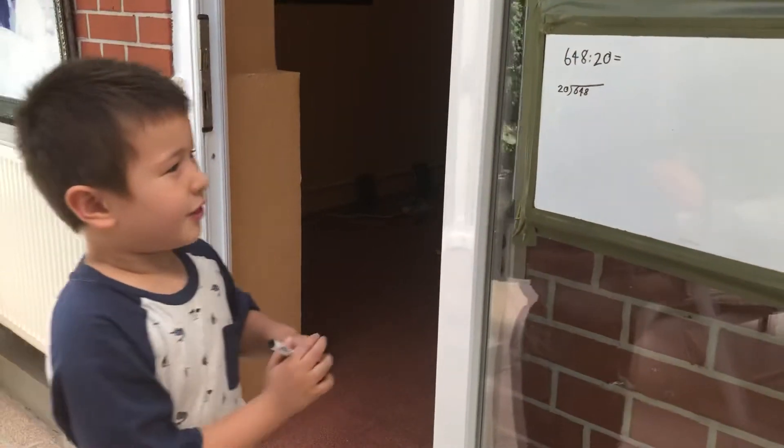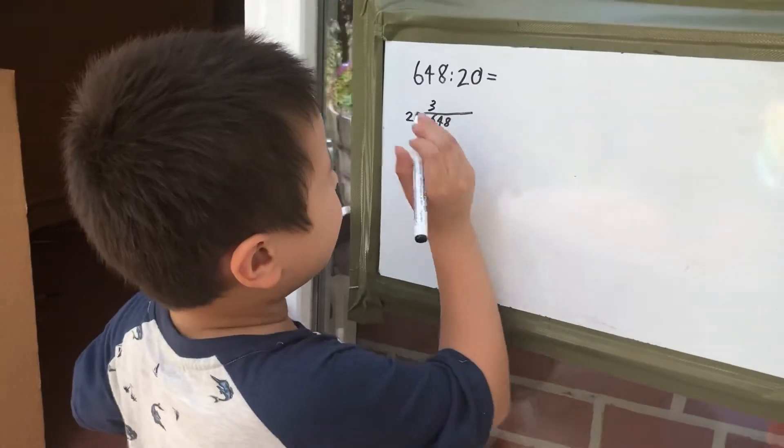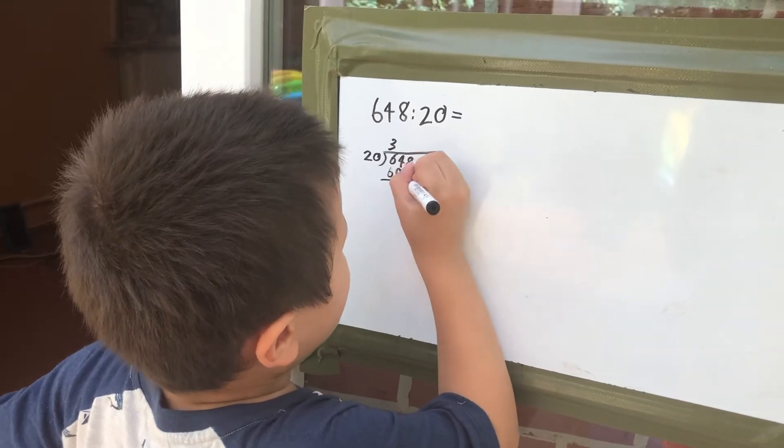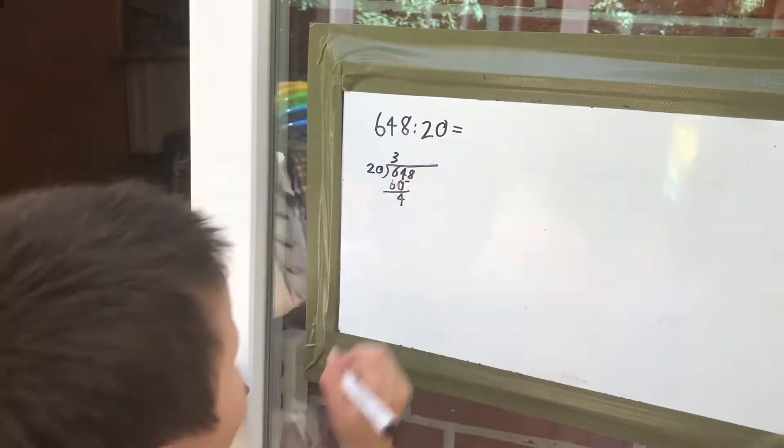3. So we write it in the other line. 3 times 20 equals 60, then subtract. 64 minus 60 equals 4.